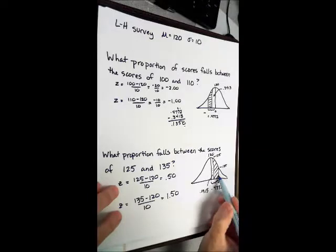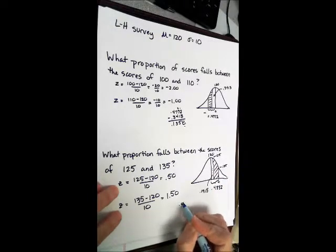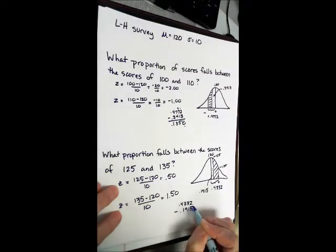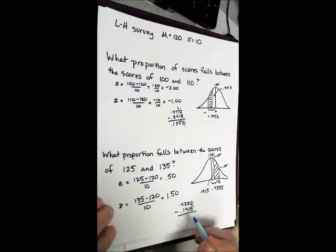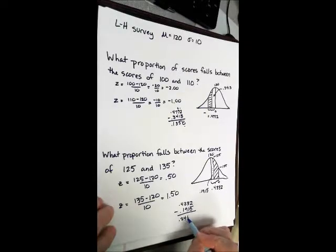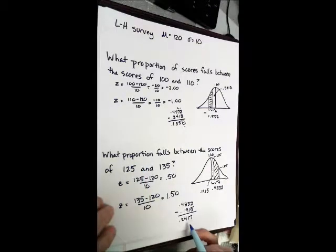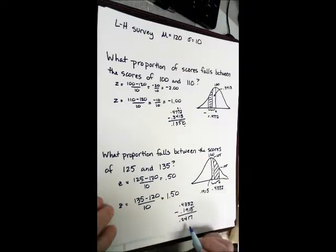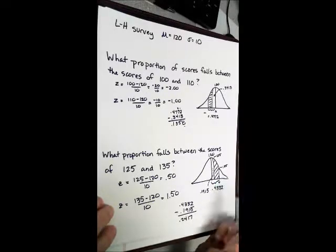We have all of this. We don't want all of it. We need to subtract that out. 0.4332 minus 0.1915. And I think somewhere along the line, I worked that out already. And it's 0.2417. If the problem's asking for proportion, you enter that 0.2417. If it's asking you for percentage, simple enough, you would change it to 24.17% of the population fall between a score of 125 and 135.